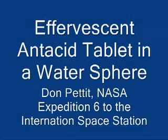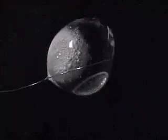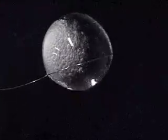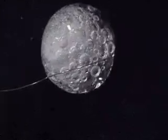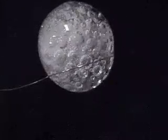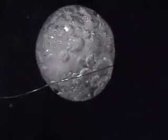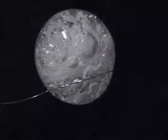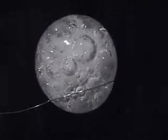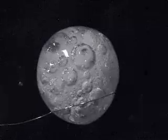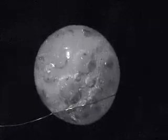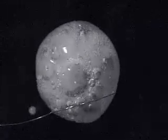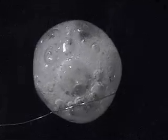Effervescent antacid tablet in a water sphere. Here's a sphere of water 50 millimeters in diameter with an effervescent antacid tablet. Bubbles form rapidly from a chemical reaction. This is an example of heterogeneous nucleation where bubbles form on a solid surface and can get a momentum exchange and travel out into the fluid. The bubbles rapidly coalesce.